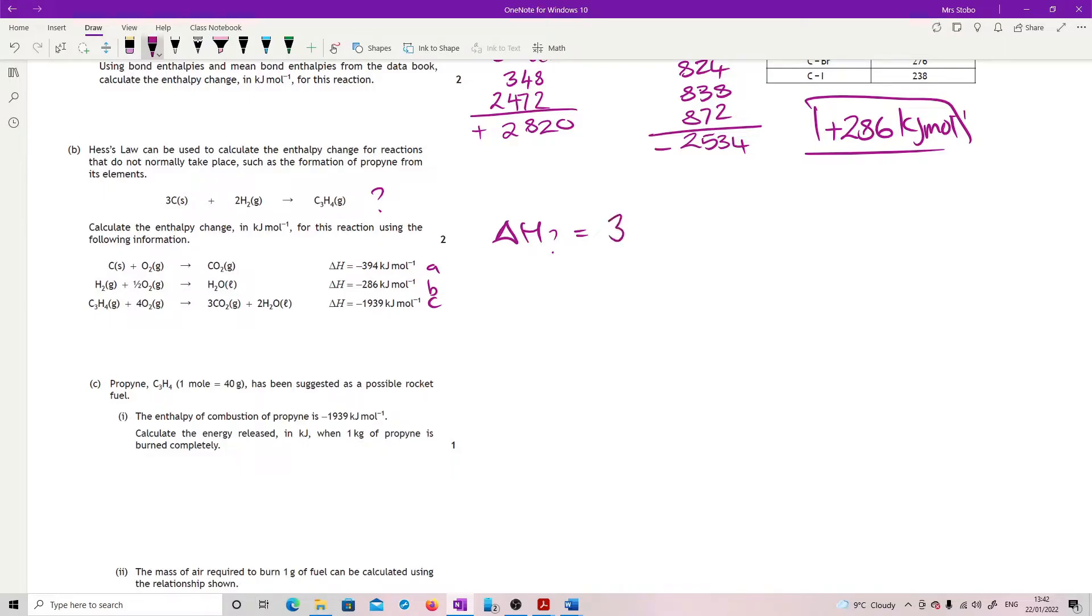So A is for my carbons. It's on the right side, but I need three of them. So I'm going to put 3A. And then my B is for my hydrogen. It's on the right side, but I need two of them. So I'm going to put in two Bs. And then C is for my propine over here. It's on the wrong side, but it's the right number of them. So I'm just going to say minus C. So that is going to be 3 times minus 394 plus 2 times minus 286 flipped over my C. So it's just become a plus 1939. Add all that up. Keeping everything in the calculator as you're going probably, would highly recommend, 185 kJ per mole.